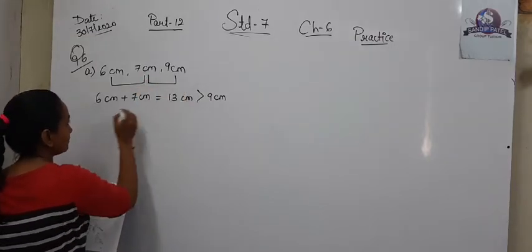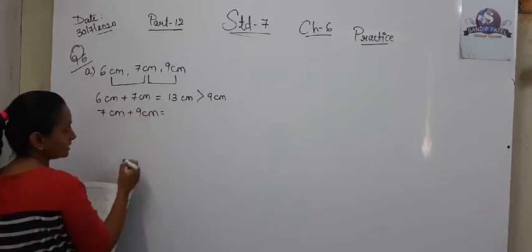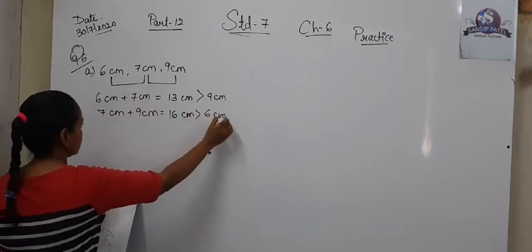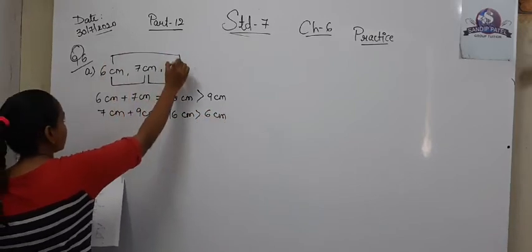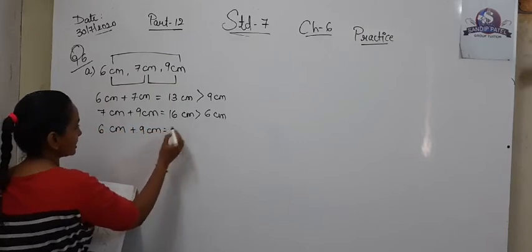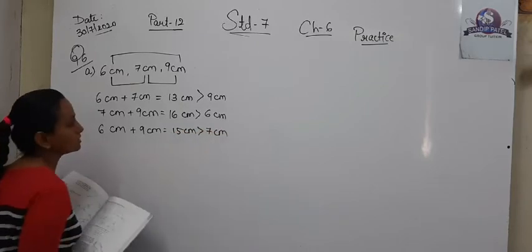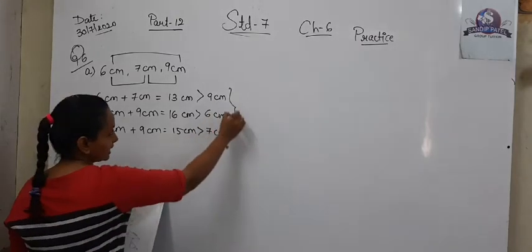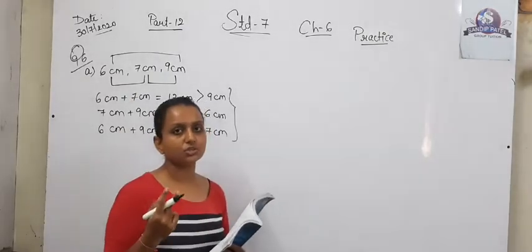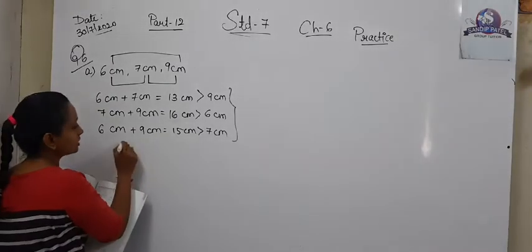Now let's take another pair: 7 plus 9 is 16 cm, and that is greater than 6 cm. Next pair: 6 plus 9 is 15 cm, and 15 is also greater than 7 cm. So in all three cases, the sum of 2 sides is always greater than the third side. So the triangle is possible.